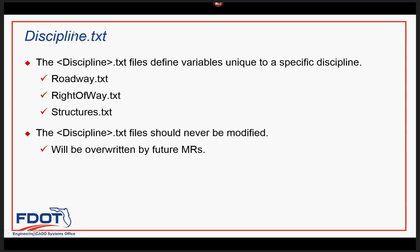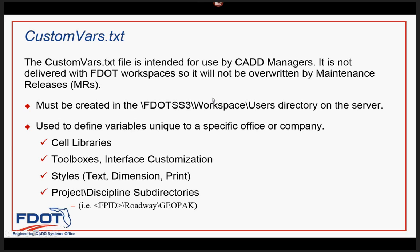The site FDOT.txt sets common variables for all disciplines — base MicroStation variables, color tables, things like that. You should never update the site FDOT.txt because every time we release an update it'll probably be updated and overwrite any changes you put there — it becomes a maintenance problem. Similarly, the discipline.txt files set things more specific to the discipline, like which DDB file is loaded for roadway versus right-of-way, which level libraries are loaded for each discipline, which cell libraries show up in the MS cell list. You should never update variables within the discipline text files either, as they'll be overwritten by future maintenance releases.